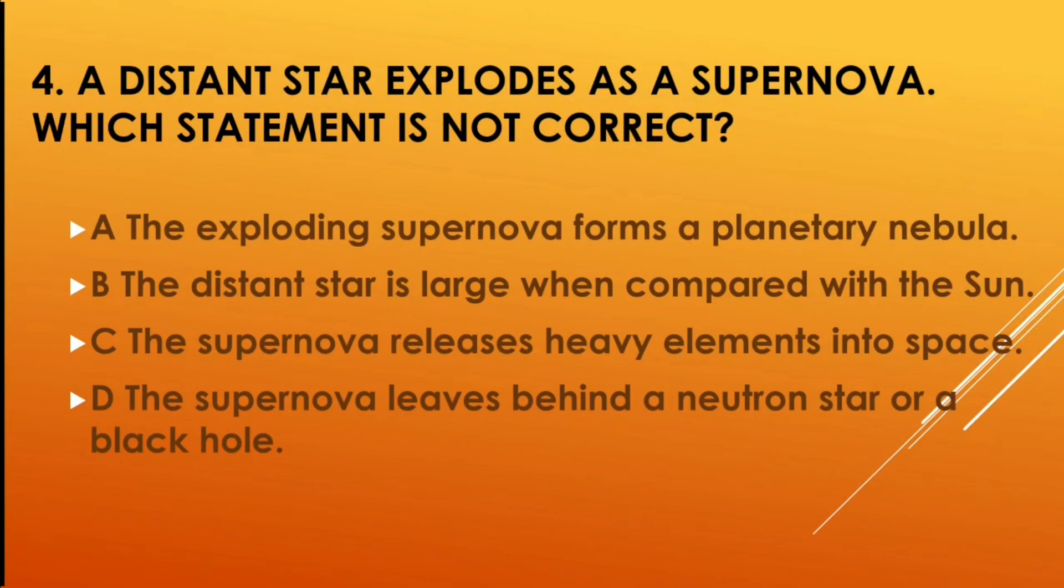In this question, a distant star explodes as a supernova. Which statement is not correct? And you can see all the four options. And the correct answer is option A. That is, the exploding supernova forms a planetary nebula, which is not correct.